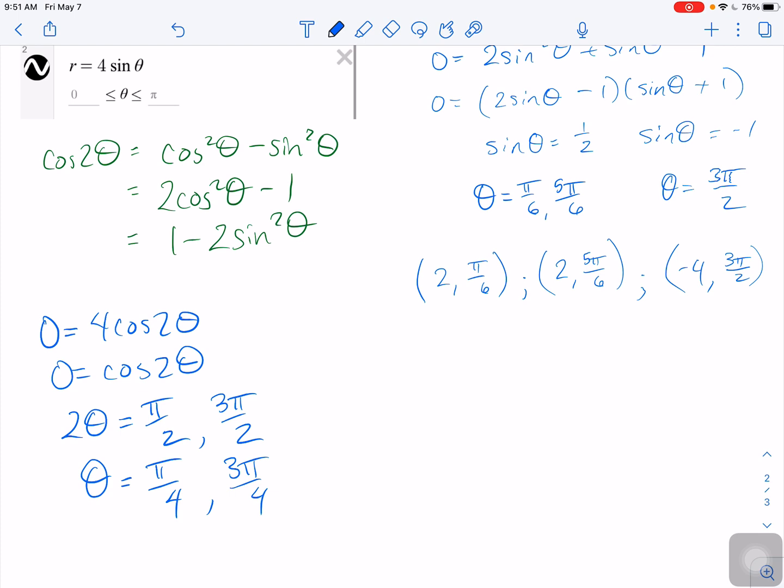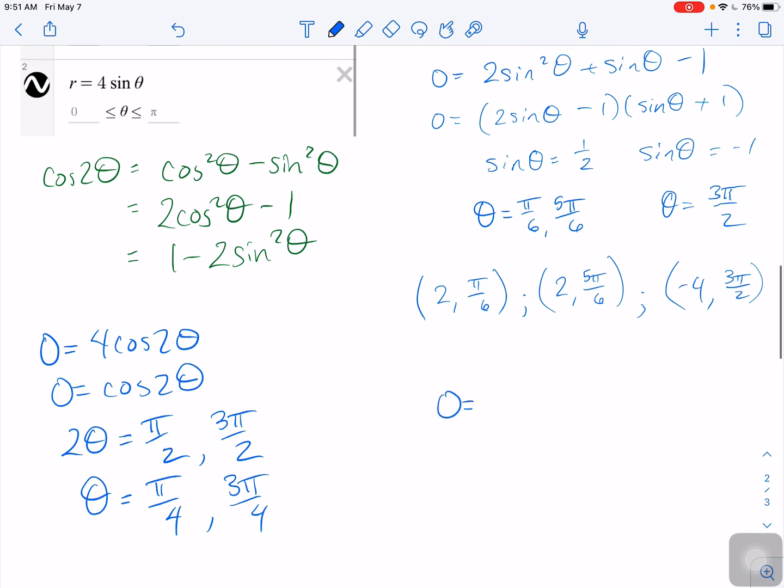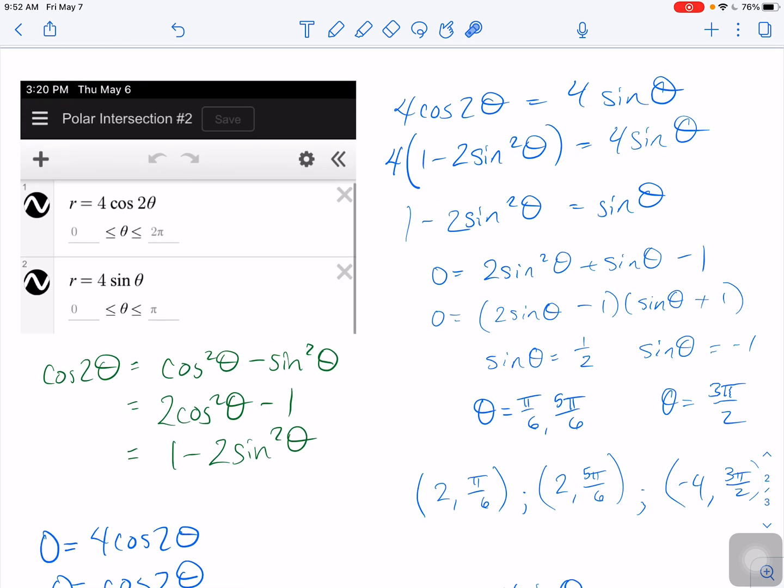Okay, so point being that then when I set this one, 0 equals 4 sine theta, we know that sine of theta is equal to 0 at pi k. So at 0, at pi, at 2 pi. There are more answers on both of these, but the point that I'm trying to make is that the theta values are different even when r equals 0.